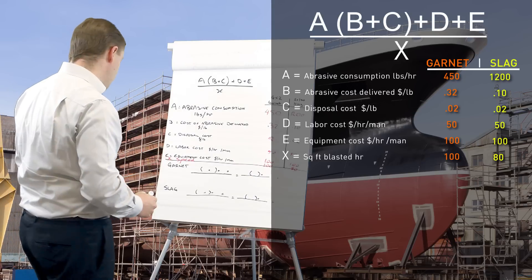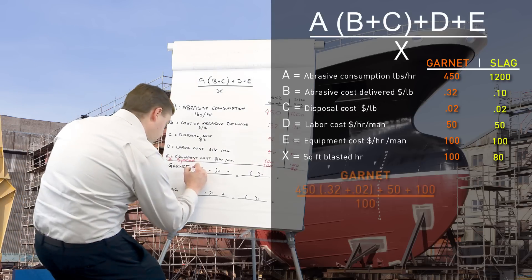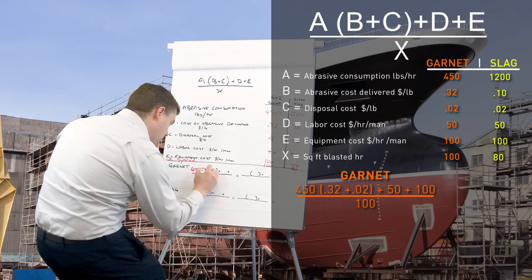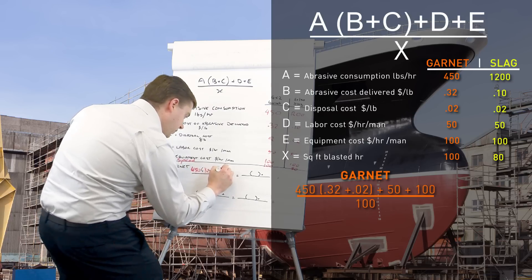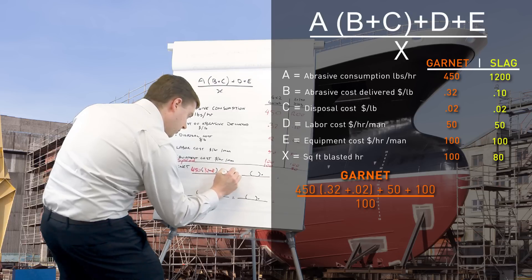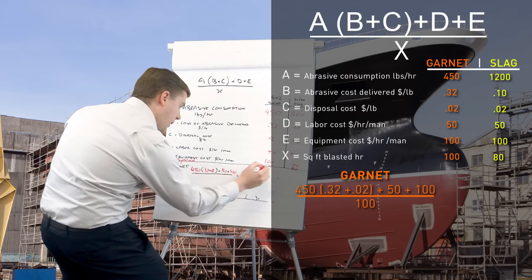Alright, so garnet, 450, 32 cents a pound delivered plus 2 cents disposal plus our 50 in labour and 100 for equipment over our speed of 100.